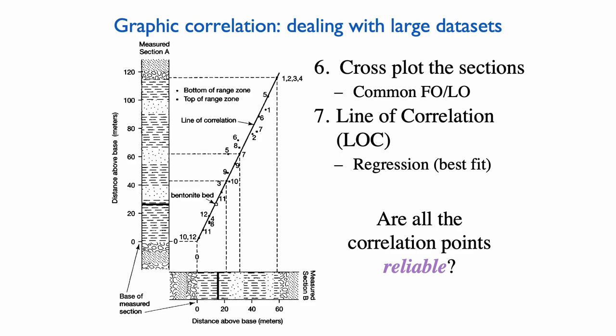Now not all data points might be useful. You might have some species that are endemic, or some species that just appear in one section but you never recover in the other section. So you might actually have data points that fall away from this line of correlation. And if that's the case, you can get rid of those data points, and that's one way that graphic correlation can help you, because it helps you filter fossils that are not so useful for at least regional correlations.